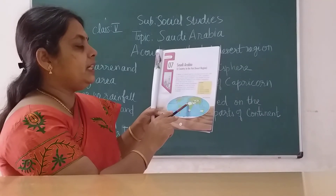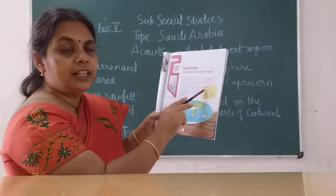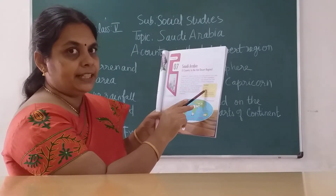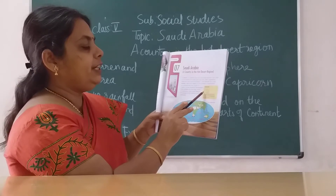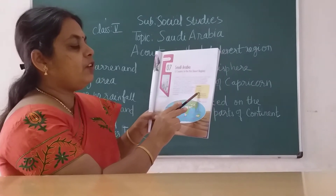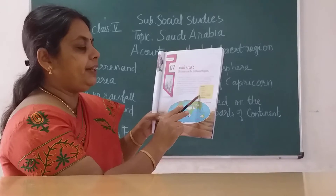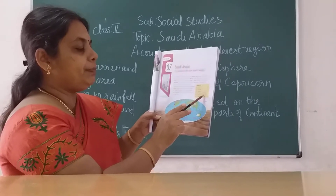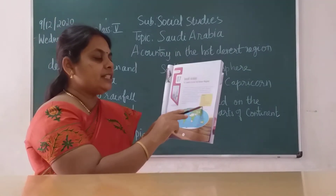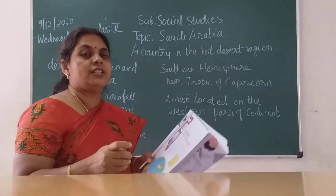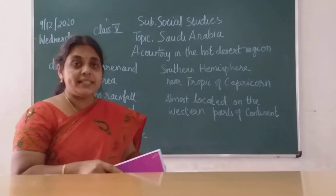Sahara is the largest desert. From the word DESERT itself: D for Dry, E for Empty, S for Sandy, E for Extreme climate, R for Reptiles, and T for Travelers. These are the features we observe in the desert.